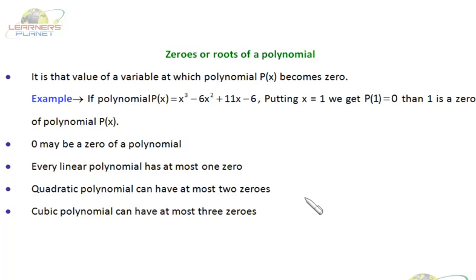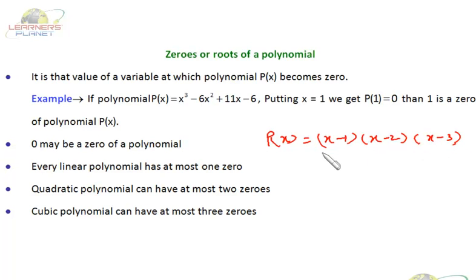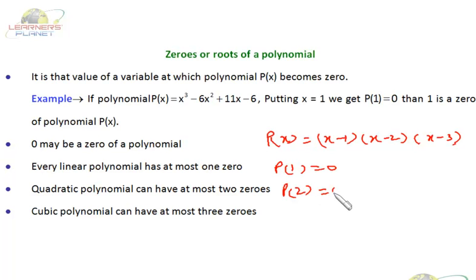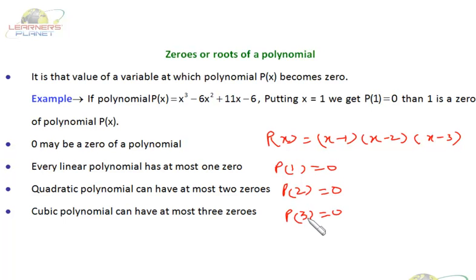Similarly, a cubic polynomial can have at most three zeros. Suppose I have p(x) = (x - 1)(x - 2)(x - 3). It's a cubic polynomial because after expansion, the highest power of x is 3. So p(1) = 0, p(2) = 0, and p(3) = 0. No other value of x can make this polynomial 0. There are three and maximum three zeros of this polynomial.